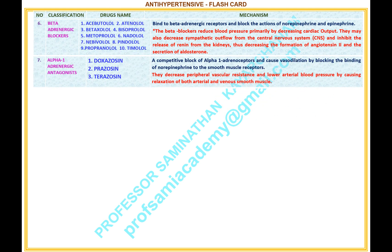Number 7: Alpha-1-adrenergic antagonists. Drugs: 1. Doxazosin, 2. Prazosin, 3. Terazosin. Mechanism: competitive block of alpha-1-adrenergic receptors causes vasodilation by blocking the binding of norepinephrine to smooth muscle receptors. They decrease peripheral vascular resistance and lower arterial blood pressure by causing relaxation of both arterial and venous smooth muscle.